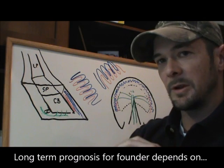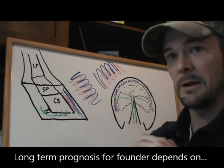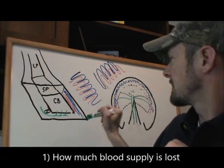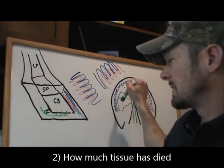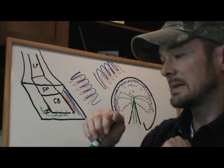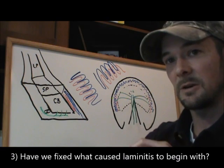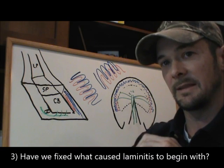The long-term prognosis with foundered horses really does revolve a lot around three big things. How much blood supply has been lost? How much tissue do we still have to play with that's still alive and viable? And lastly, has the condition that started laminitis actually been corrected, addressed, slowed, anything like that?